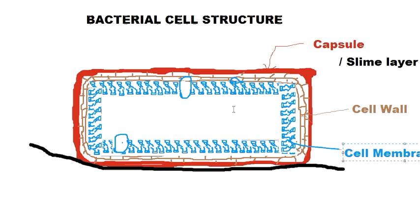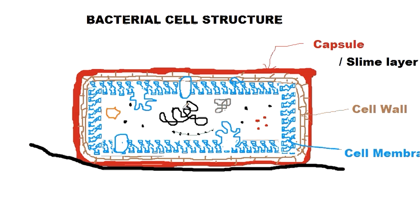Inside the cell membrane there is the cytoplasm. As discussed previously, bacteria or prokaryotes do not have a definitive nucleus. Inside the bacteria's cell membrane there are some structures. One thing to notice is membranous in-foldings of the cell membrane, which fold inward like that — and these are called mesosomes.